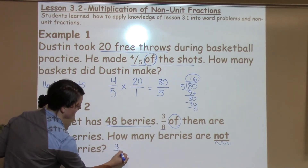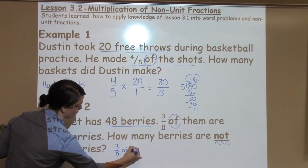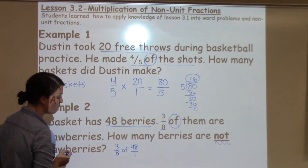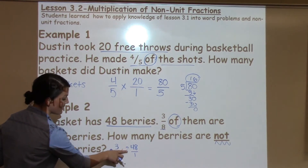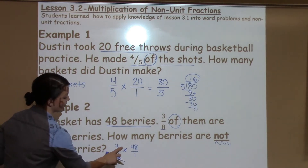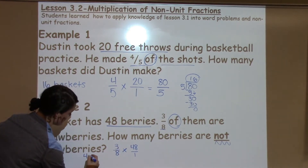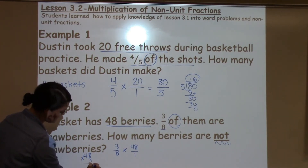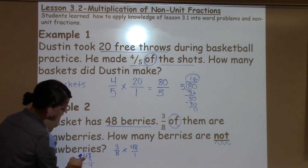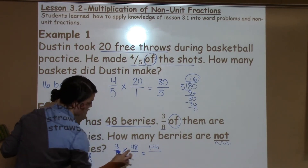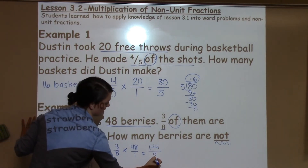So I'm going to take three-eighths of 48. I want to make my whole number look like a fraction, so I place it over 1. 'Of' in math means to multiply, so I'm just going to multiply straight across. 48 times 3 — I might not know that in my head, so I'm going to pull it off to the side. 8 times 3 is 24. 3 times 4 is 12, plus 2 is 14. So I have 144. And then 8 times 1 is 8.